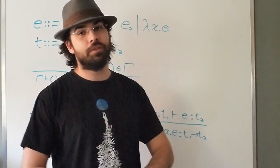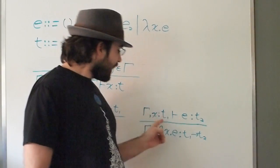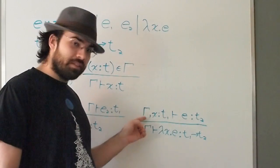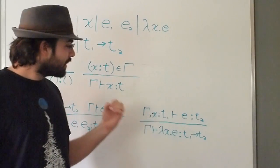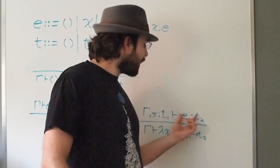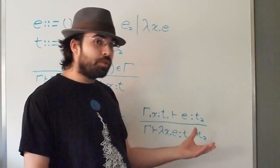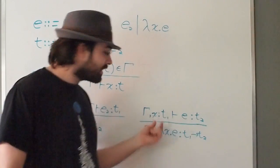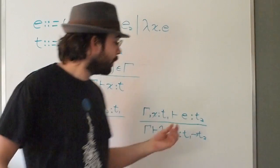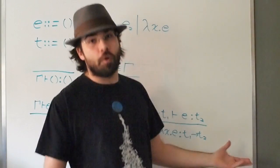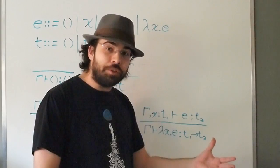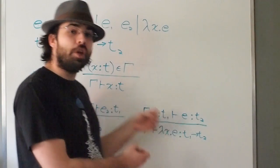Here when we extended the context, not only are we saying that inside of the body x has type t1, but we're also saying that inside of the body x is available and therefore using it is allowed because it's in scope.